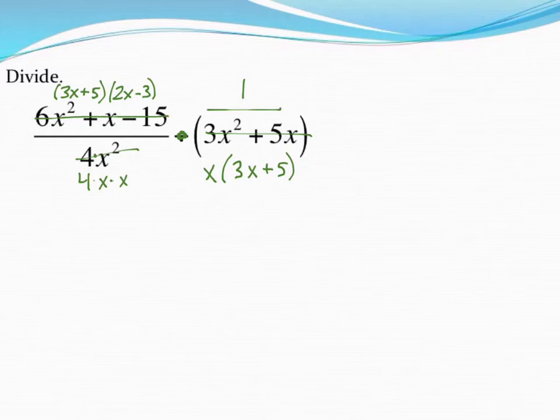So now's the fun part. We're looking for anything that's the same in the top and bottom in order to cancel them out. Well, right away, I see that 3x plus 5 factor can be canceled out from the top and bottom. And well, it turns out that that's it this time. There's nothing else that's the same in the top and bottom.